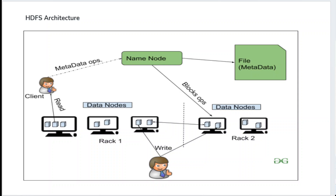In this architecture, the NameNode maintains a file containing all metadata information. If a client wants to read data, it reads from the DataNodes. If the client wants to write data, it writes into HDFS. Any block-related or node-related operations are handled through the NameNode, and any metadata-related operations are also performed with the help of the NameNode. This is a diagrammatic representation of the HDFS architecture.